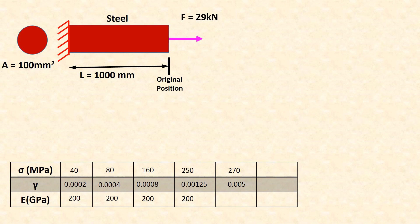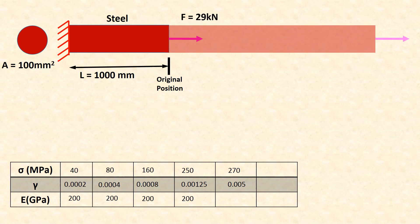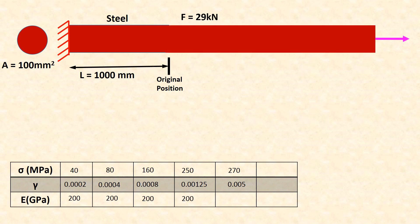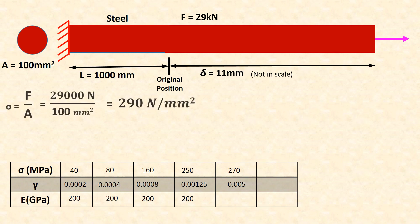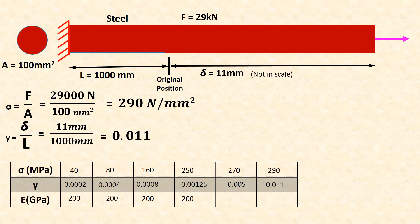Again, increasing force to 29 kN — elongation disproportionately increasing. Delta equals 11 mm. Stress is 290 MPa, gamma is 0.011. When force is removed, steel never returns back to original position because it is in the plastic region.